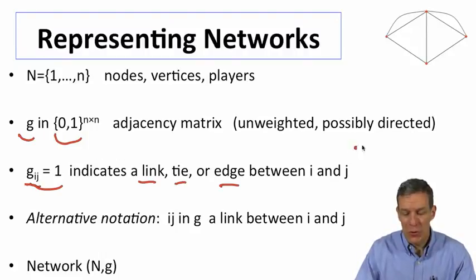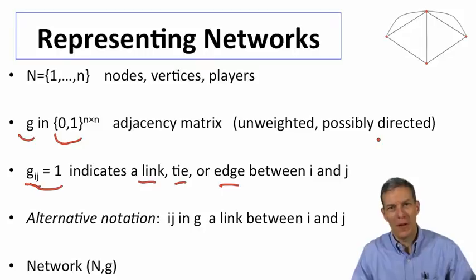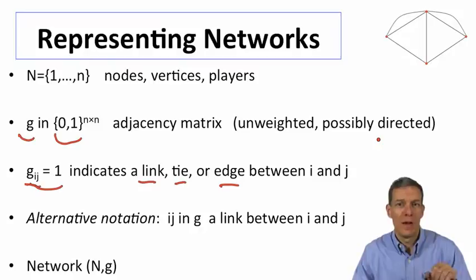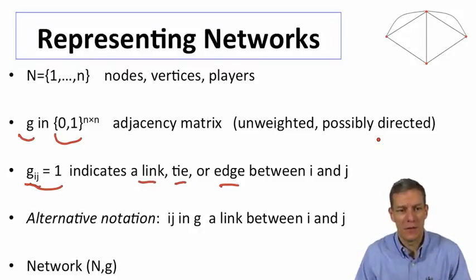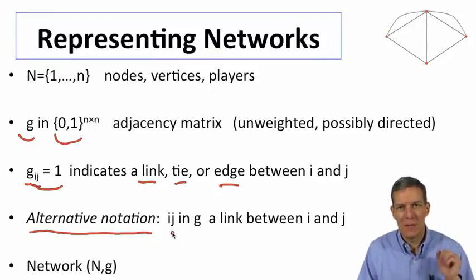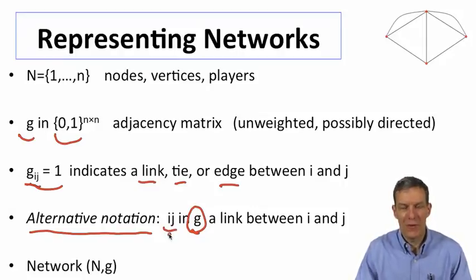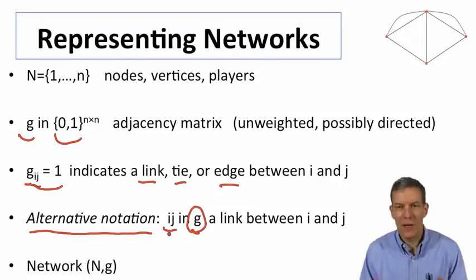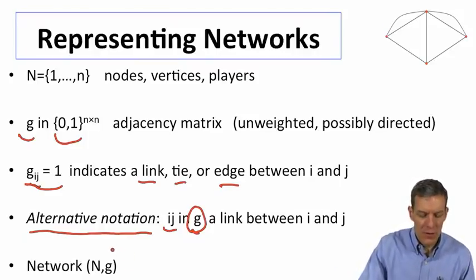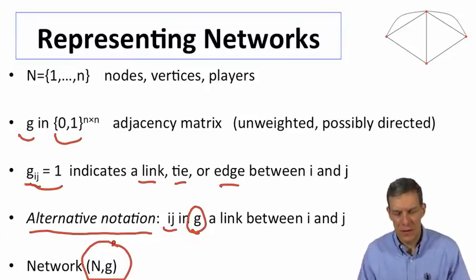But we could allow for directed networks, we could allow for weighted networks. When we looked at the financial relationships or the amount of debt that was held inside one country of the sovereign debt of another country, that's going to tend to be a directed network, and it's going to be a weighted network with different intensities on things. An alternative notation is going to be very useful for representing networks. Instead of thinking of an adjacency matrix, we'll think of representing a graph or a network by just listing all the relationships that are present. We'll have is ij is in g if that means that there's a link between nodes i and j, a very simple, succinct notation. We'll just keep track of the sets of links that are present.